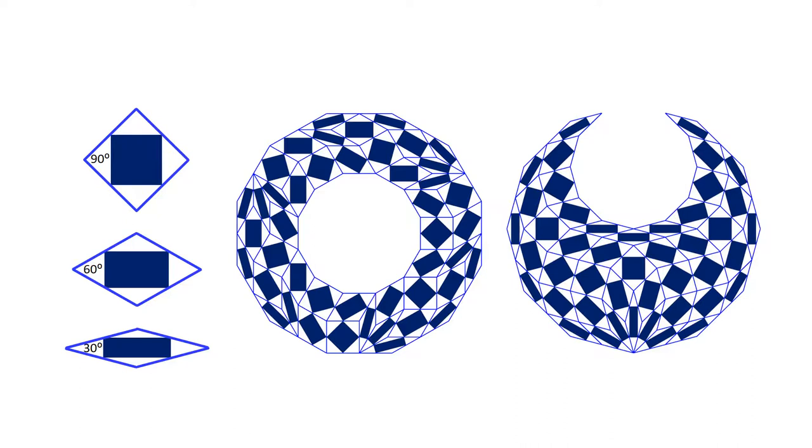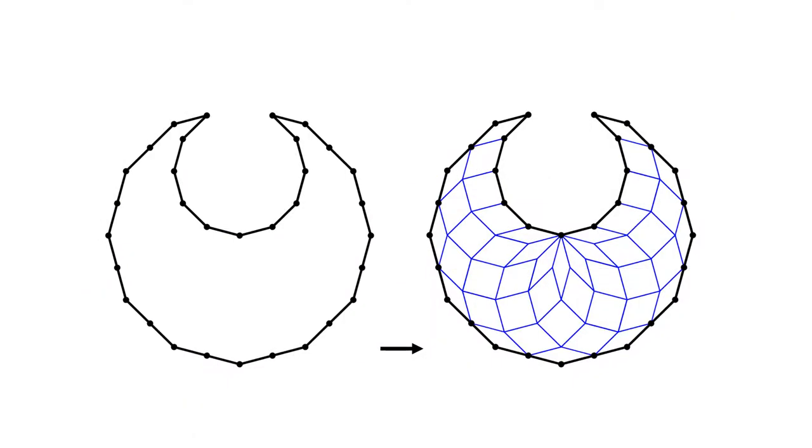The patterns are made by putting together three kinds of rhombi with the same edge length and different corner angles. Given a boundary, this is a tiling problem with the rhombic tiles.